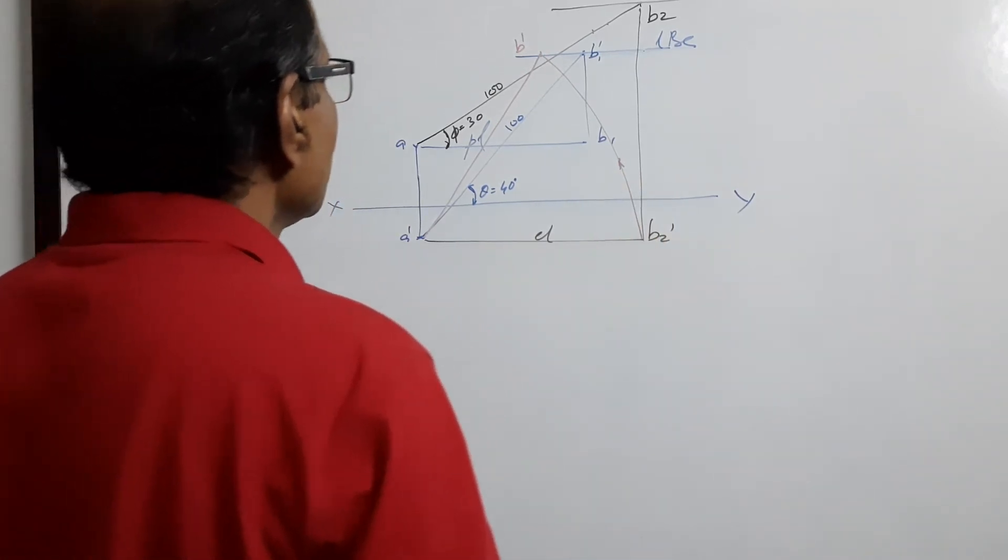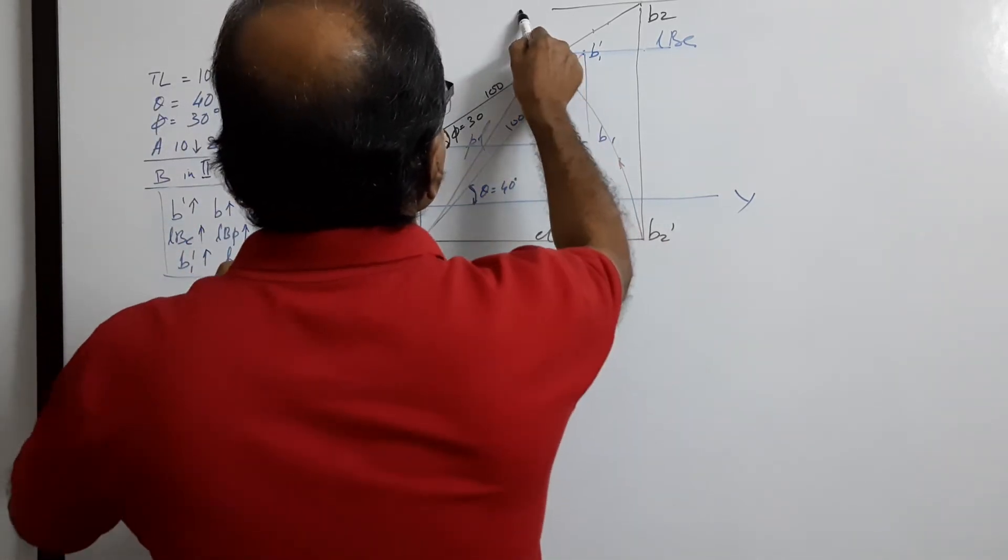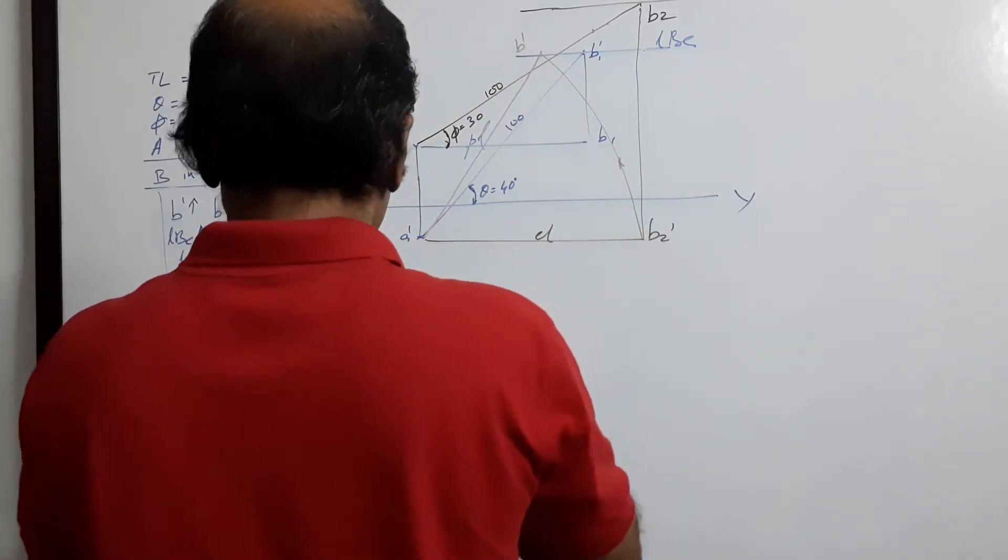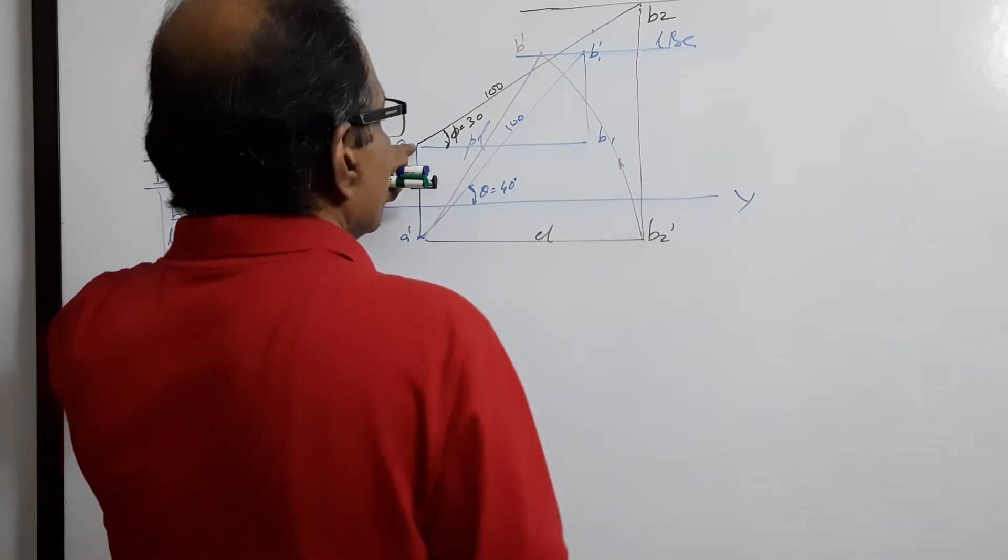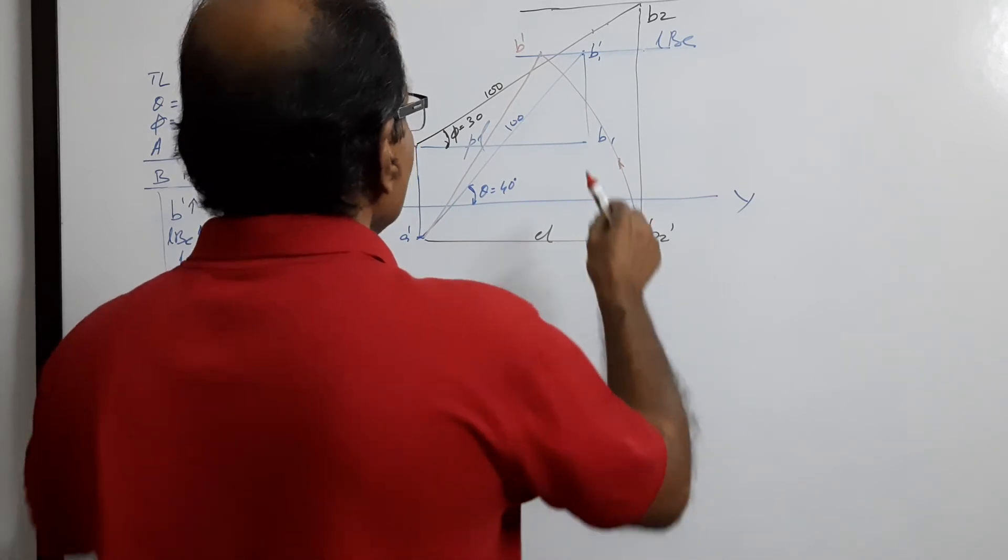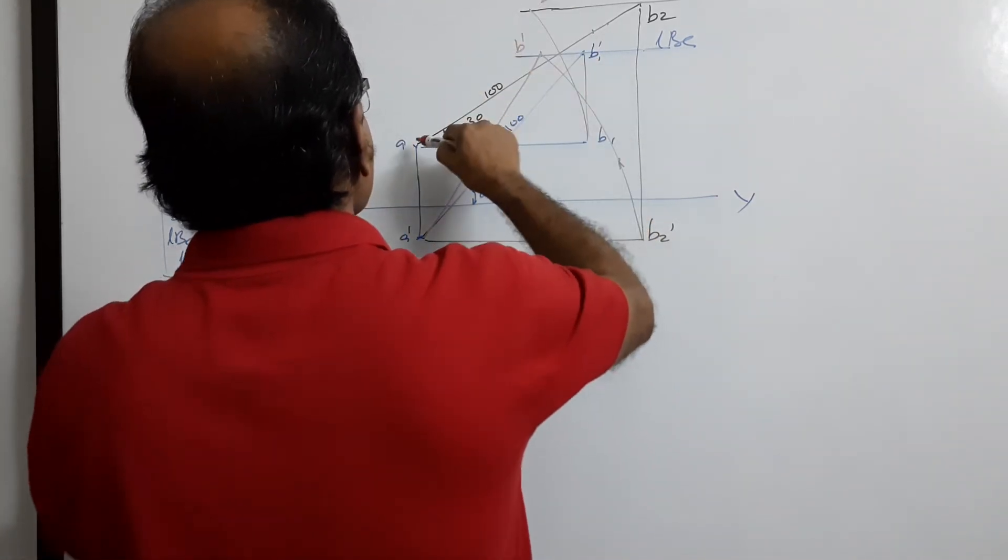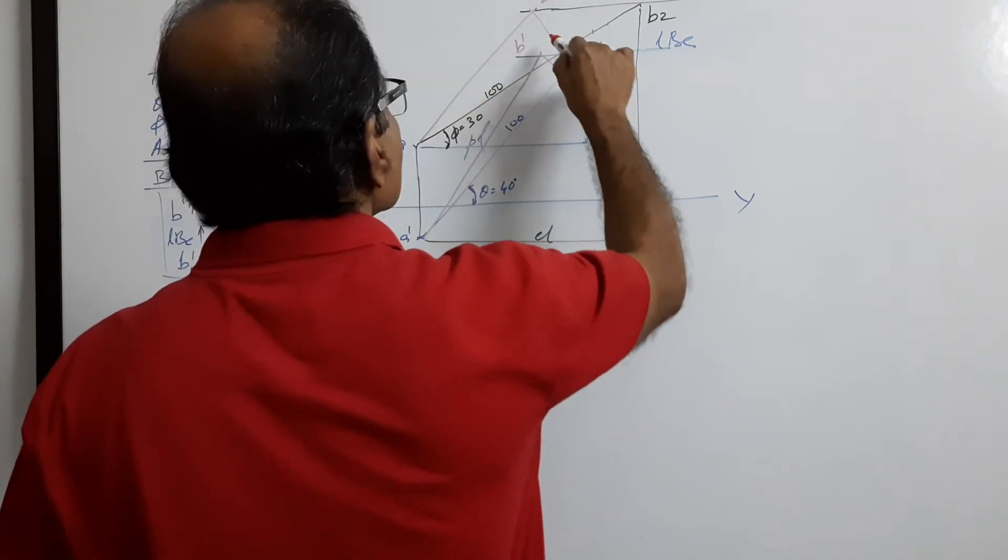Then what? A as center. This is A as center, plan length AB1 as radius, theta arc on LBP. B. AB is the final plan.